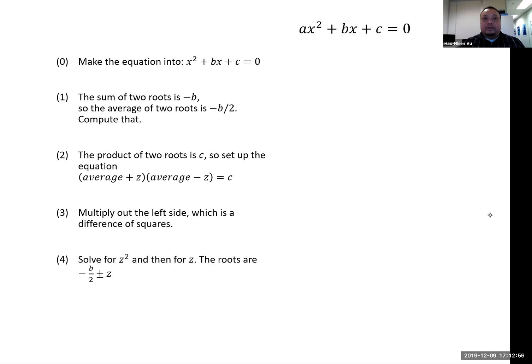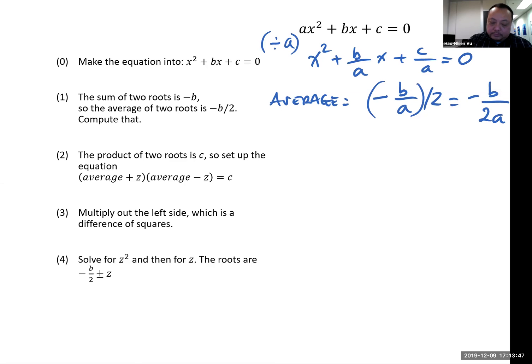In the general situation of ax squared plus bx plus c, I want to turn the equation into an equation with a equals 1. Then first I divide by a. So I get x squared plus b over a times x plus c over a equals 0. The average is now the new b divided by 2. So that's minus b over 2a. And the products are going to be negative b over 2a plus z times negative b over 2a minus z equals to the new c, which is c over a.